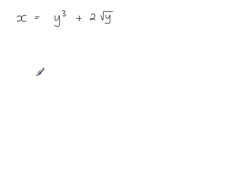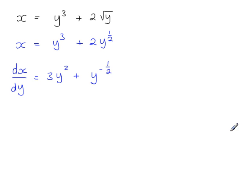x equals y cubed plus 2 times root y, so x is equal to y cubed plus 2y to the power of a half, using the index form instead of the surd form. We're differentiating x with respect to y, so dx by dy is equal to 3y squared plus, if the half comes to the front and multiplies with the 2, you get 1, so y to the power of, subtracting 1 from the power there, minus a half.